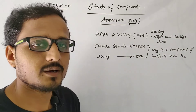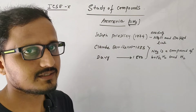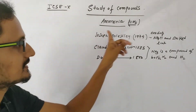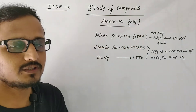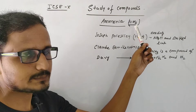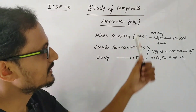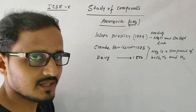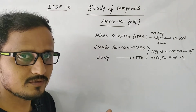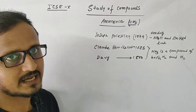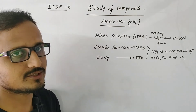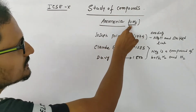Hello everyone, welcome to Prochem Academy. Today I will discuss another topic from the study of compounds, class 10 ICSC — that is ammonia. Ammonia is a gaseous compound. We will discuss the preparations and other things here. It is very important because questions will come from here in ICSC, and it is also important for general knowledge.